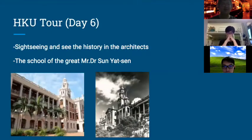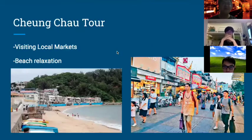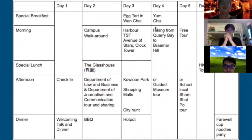On the sixth day, we do sightseeing at Hong Kong University. We chose it because it is one of the most historical places in Hong Kong — the school of the great Dr. Sun Yat-sen. Since it is historical, we can see history through artifacts and architecture. On the seventh day, we go to Changzhou to visit local markets and relax on the beaches. We are striking a balance between authenticity and being interesting and attractive to our participants.